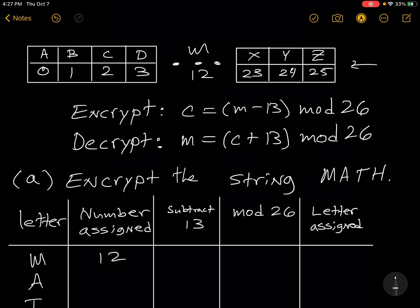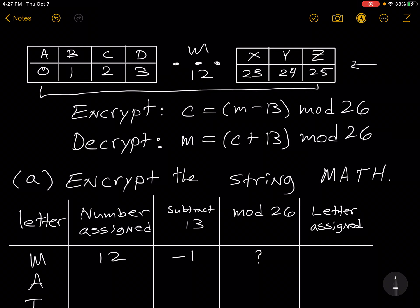Next I subtract 13. So 12 minus 13 is negative 1. So now let's think about what goes here. So what we want to put here is a number between 0 and 25 that is congruent to negative 1 mod 26.